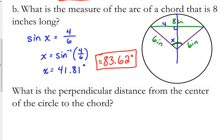Now, another part of this question says, what is the perpendicular distance from the center of the circle to the chord? So, what is that asking me for? The perpendicular distance from the center of the circle to the chord. It's asking me for this segment right here. So, how can we find that segment?